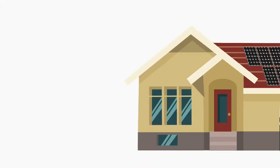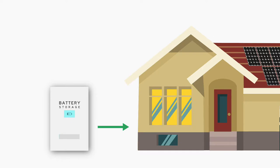When the grid goes down, you'll be able to use the energy your solar system produces, as well as the energy stored in your battery, to power your home until the grid comes back.